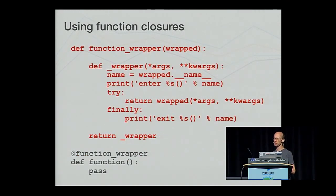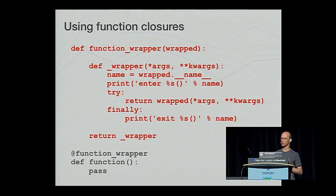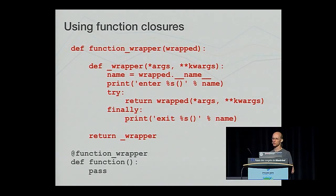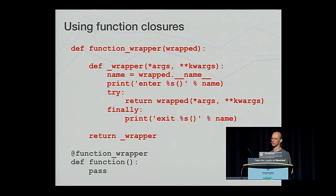Using a class to implement the wrapper for a decorator isn't actually that popular. Instead, a function closure is more often used. In this case, a nested function is used as the wrapper and is what is returned by the decorator. When the now-wrapped function is called, the nested function is actually being called, which in turn calls the original wrapped function. The nested function doesn't get passed the original wrapped function explicitly, but it will still have access to it via the arguments given to the outer function call. This does away with the need to create a class, and that's why it is generally more popular.